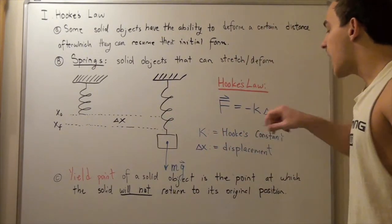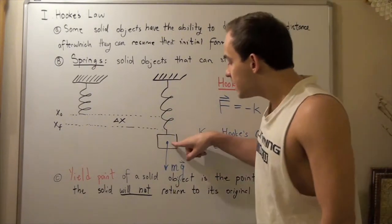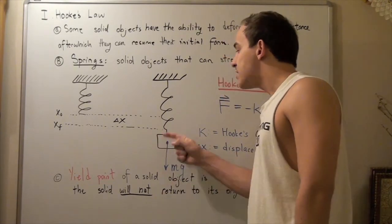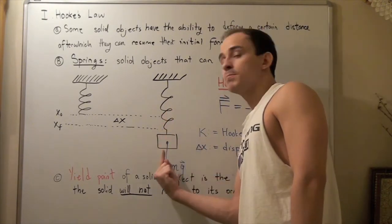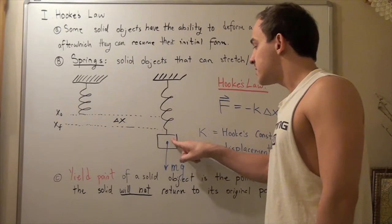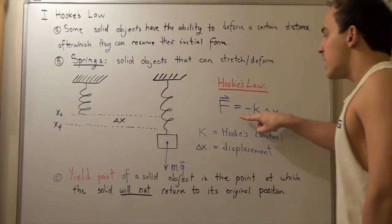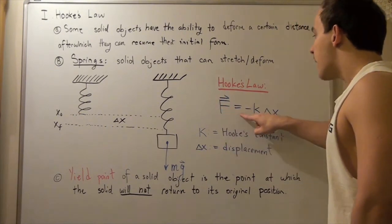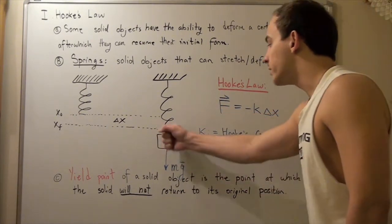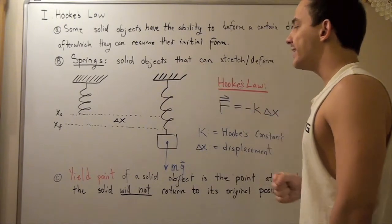This negative sign comes from the fact that this is pulling down and the force of the spring is pulling up on it. This is our action force and our reaction is this negative force. They have equal magnitude but different signs. One is pulling down and one is pulling up.